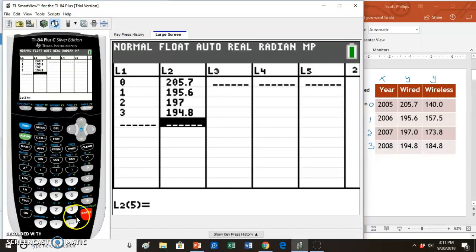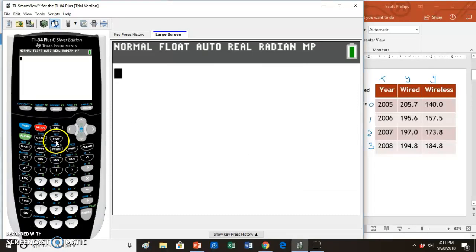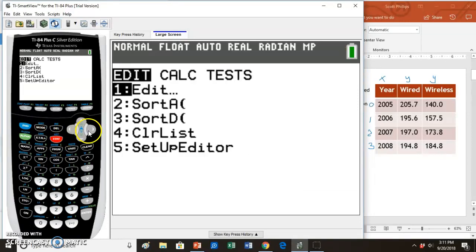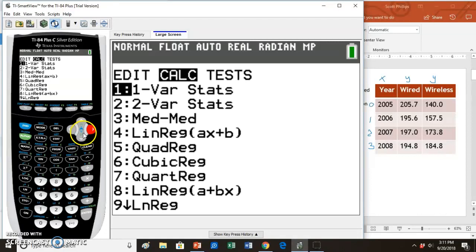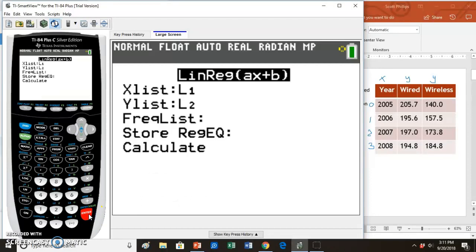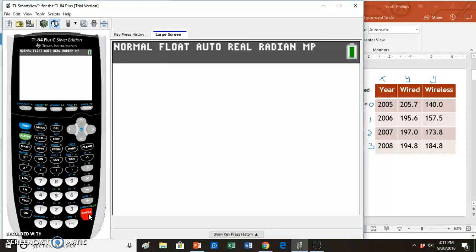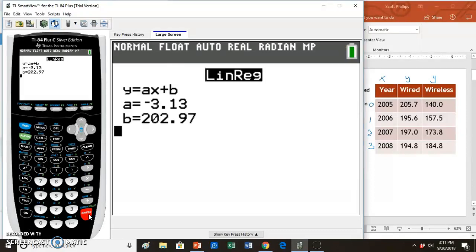I was asked for a regression equation so I will quit this, go back to stat, arrow over to calculate, and arrow down to linear regression. I will enter through the list, list. And my calculator gives me an equation which I'm going to jot down back on my PowerPoint slide.